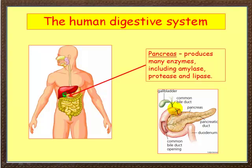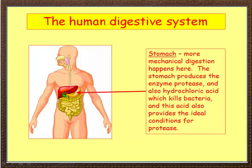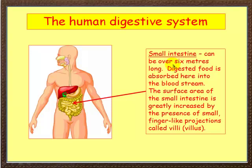The pancreas is an amazing organ, full of enzymes — it produces those into the small intestine. The stomach has a pyloric sphincter which takes food into the small intestine. On the way, it picks up enzymes from the pancreas.